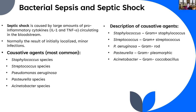Usually, sepsis starts as a localized minor infection that gets out of hand, which is why even minor wounds need to be addressed quickly. The most common causative agents are Staphylococcus species, Streptococcus species, Pseudomonas aeruginosa, Pasteurella species, and Acinetobacter species.